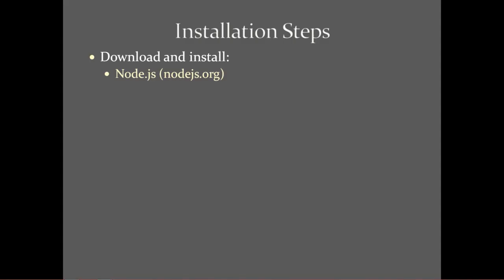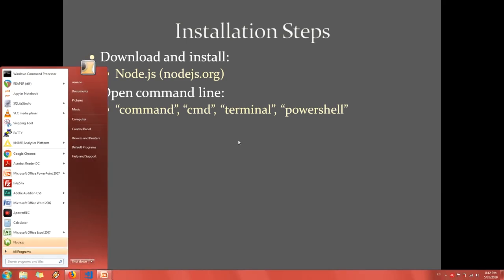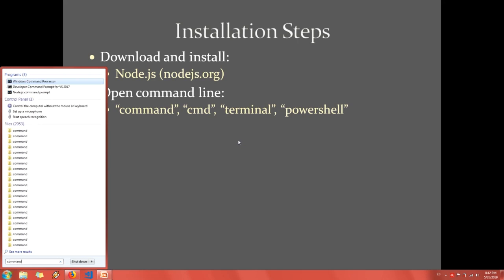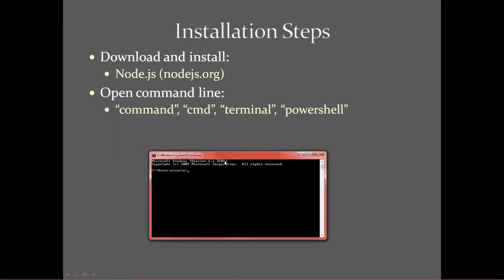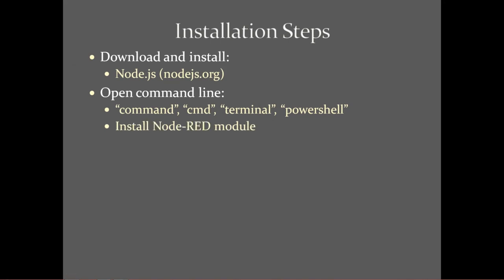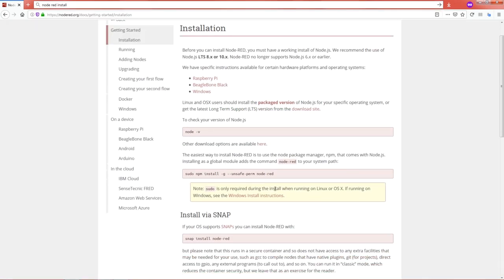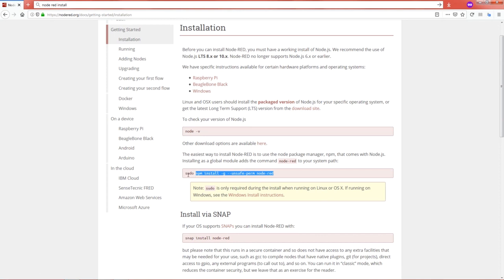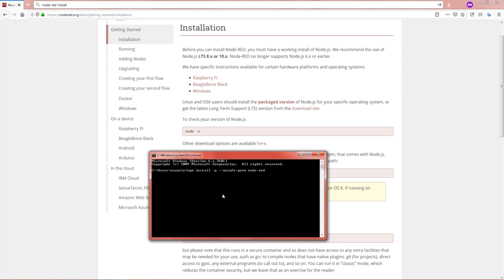Now that Node.js is installed, we need to open the command line — on Windows you can use 'cmd'. Then we will install the Node-RED module. I can search the internet for 'how to install node-red' to find the install command. If you are on a Mac or Linux machine, you will need to use sudo. Otherwise, simply copy the command, go to your command line, paste it, and run it.